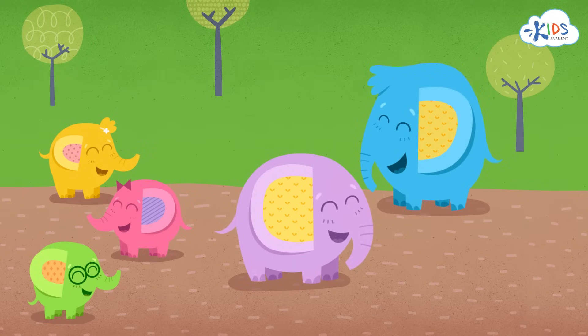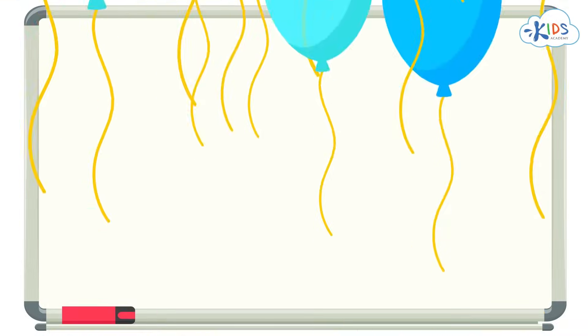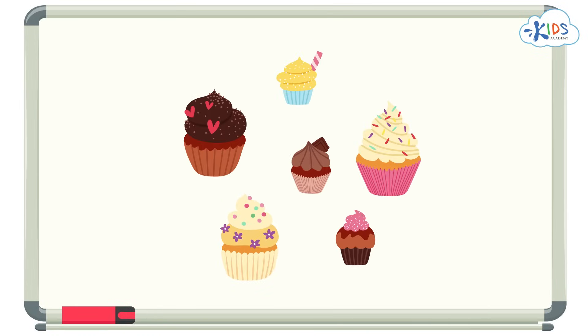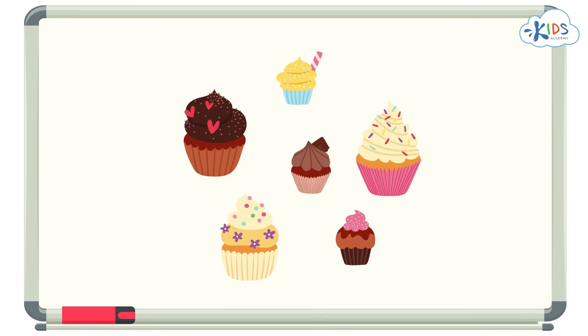Let's try sorting one more group of objects by their size. Check out these cakes. I love cake. There's some chocolate cakes and vanilla cakes. Some cakes are big and some cakes are small. That's a lot of cakes and there are a few different ways we can sort them, but today let's sort them by size.